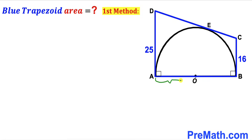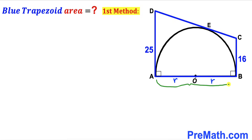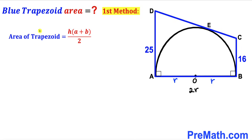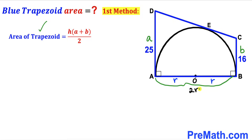We can see AO is the radius of this semi-circle, and likewise OB is the radius as well. I'm going to label this radius as lowercase r. So this whole diameter AB length is going to be two times r. Since we are calculating the area of trapezoid ABCD, let's recall the area formula: area equals height H times the sum of bases A and B, all over 2. Here base A is 25 units, base B is 16 units, and the height is 2r.